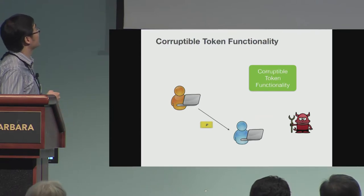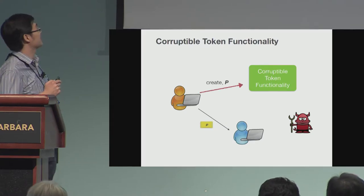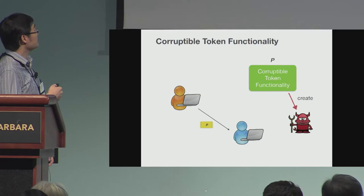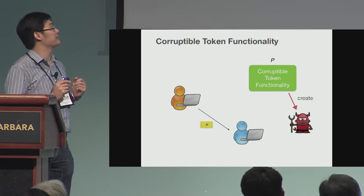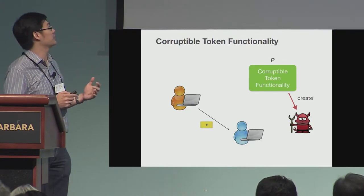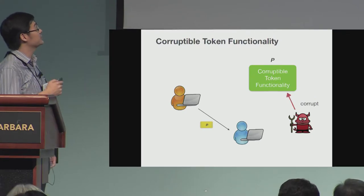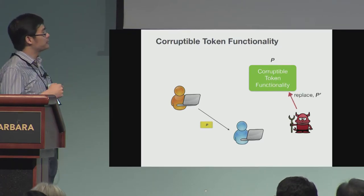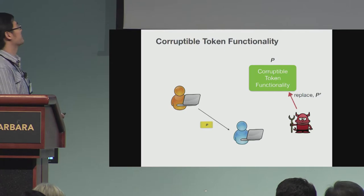Now, what is the corruptible token functionality? The sender wants to create a token for program P, and the adversary gets notified. But instead of just interrupting — and note that in the token functionality with abort, the adversary does not learn P at all — in the corruptible token model, if the adversary chooses to corrupt this token creation, he will actually get P. He can then replace P with any different program P-prime, or keep the same program if he wants.